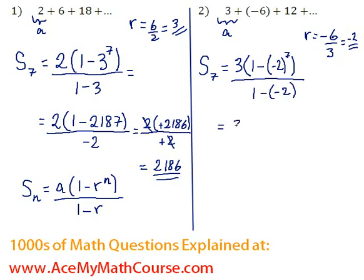So we're going to get three times one minus. Now two to the power of seven is 128.